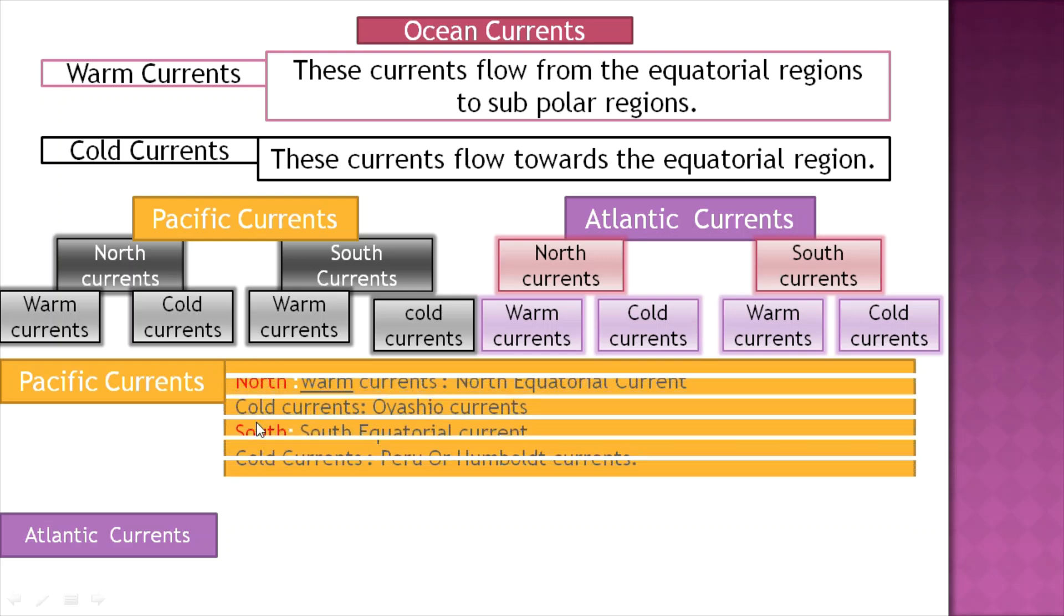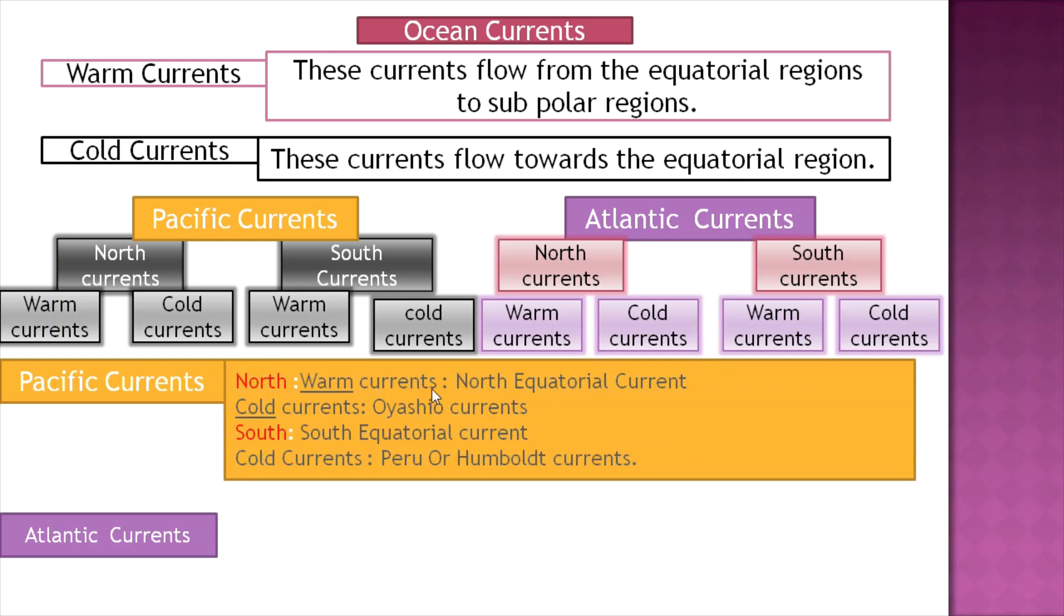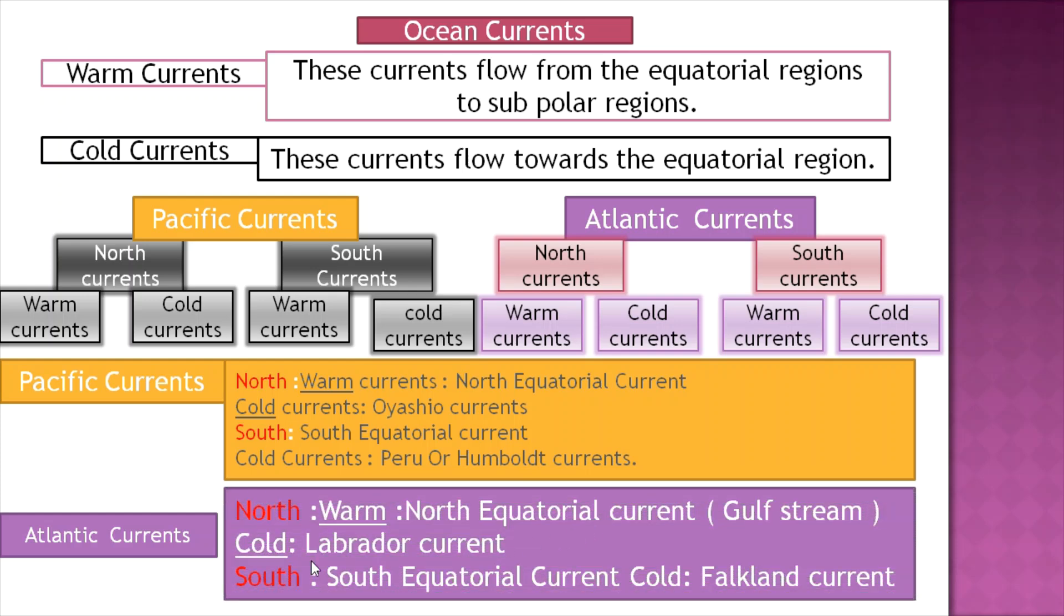In the Pacific Ocean, warm currents include the North Equatorial Current, while cold currents include the Oyashio Current and the Peru or Humboldt Current. In the Atlantic, warm currents include the North Equatorial Current and Gulf Stream, while cold currents include the Labrador Current and Falkland Current.